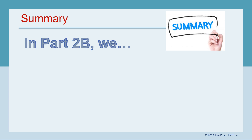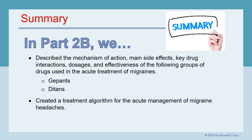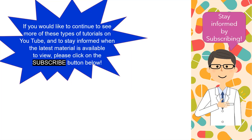Summary: In Part 2b, we described the mechanism of action, main side effects, key drug interactions, dosages, and effectiveness of G-PANs and DITANs used in the acute treatment of migraines. We also created a treatment algorithm for the acute management of migraine headaches. In Part 3 of this three-part series, we will learn all about the medications and treatments used to prevent migraines, so stay tuned.